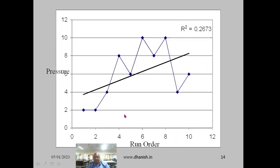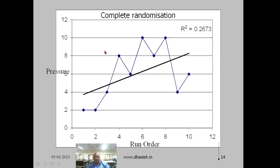For the previous data, the graph of pressure versus run order shows a slight increase. Ideally it should be horizontal with no trend. With small sample sizes it is difficult to get a perfect run order, so this may be acceptable. This was for complete randomization, where the entire run order was randomized.